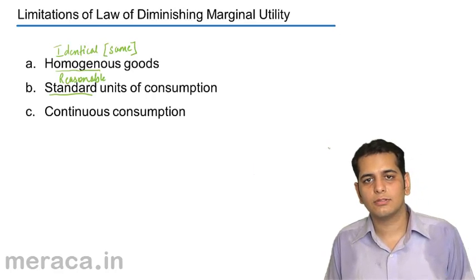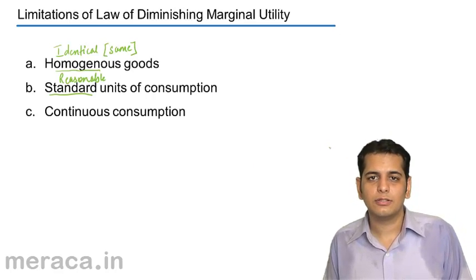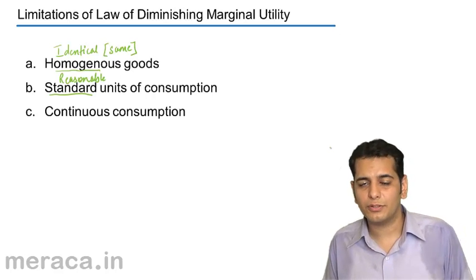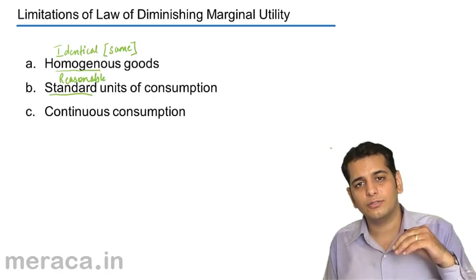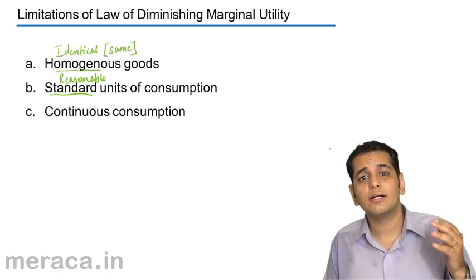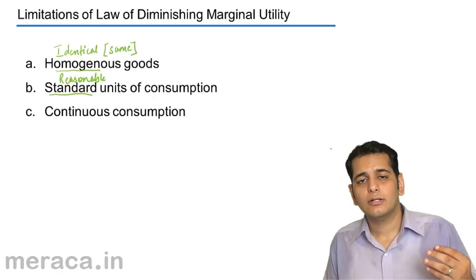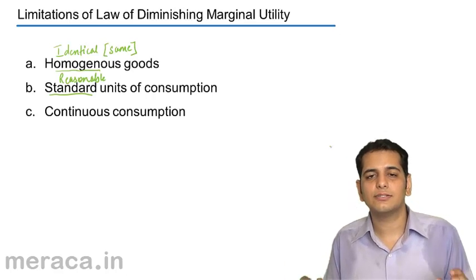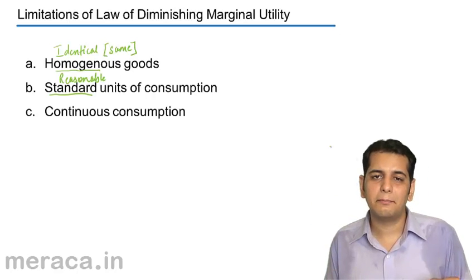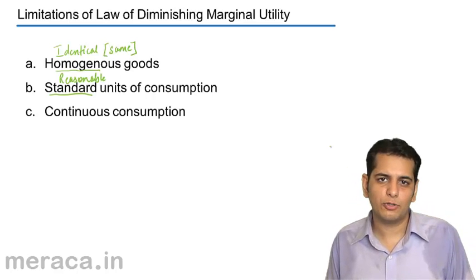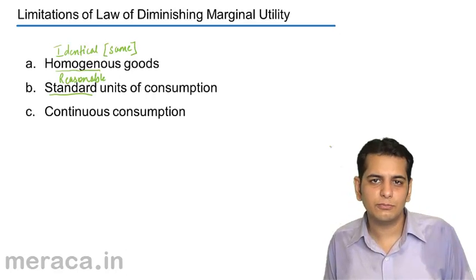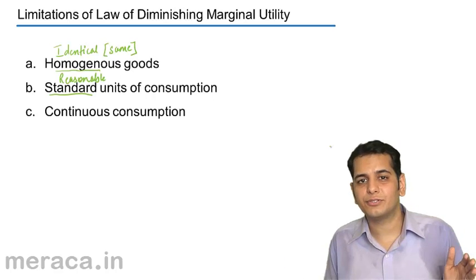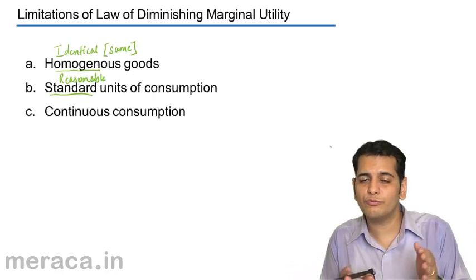Third: continuous consumption. Your consumption has to be continuous. It cannot be the case where you are consuming one unit today, the other unit tomorrow, the third unit the day after, and so on. The consumption has to be continuous. Because if there is a gap between consumption, the satisfaction level may change — it may increase or decrease depending upon the need or the intensity of the want to consume that commodity. For the law to operate, it is important that consumption is continuous with no gap between the consumption of two units.